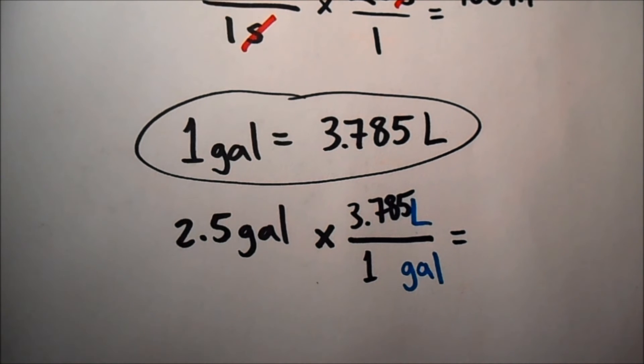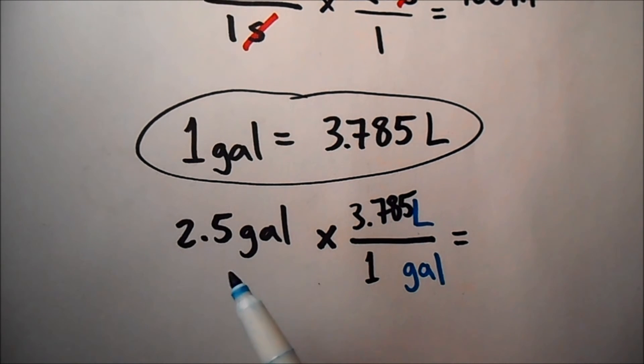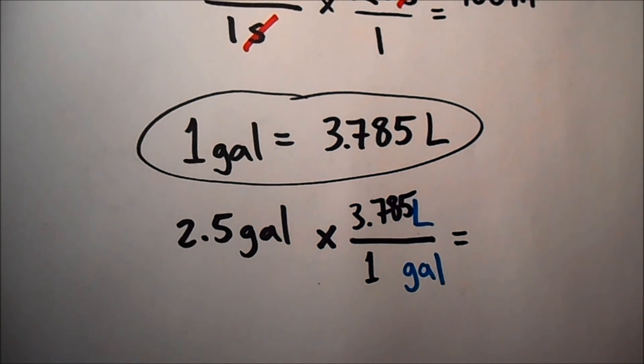When does a value have infinite sig figs? This 2.5 gallons, I don't know what we're measuring here, but it's something that was measured. I don't really know if it's exactly 2.5 with infinite zeros afterwards. This could be really 2.53 or it could have been 2.49 and it got rounded up to 2.5. So this is measured and it does have significant figures of just 2.